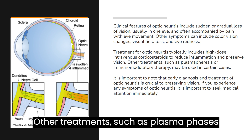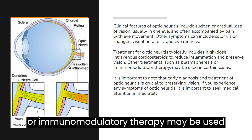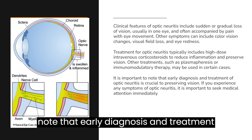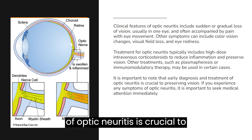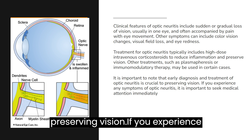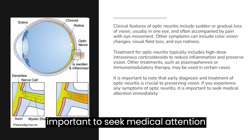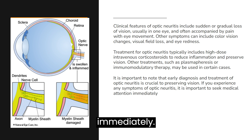Other treatments, such as plasmapheresis or immunomodulatory therapy, may be used in certain cases. It is important to note that early diagnosis and treatment of optic neuritis is crucial to preserving vision. If you experience any symptoms of optic neuritis, it is important to seek medical attention immediately.